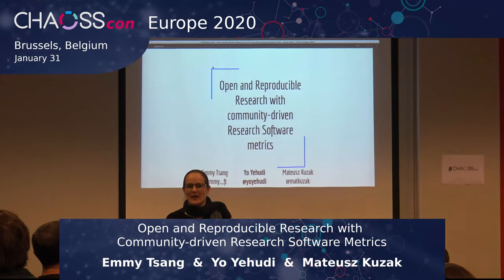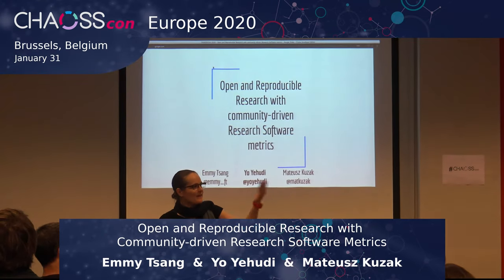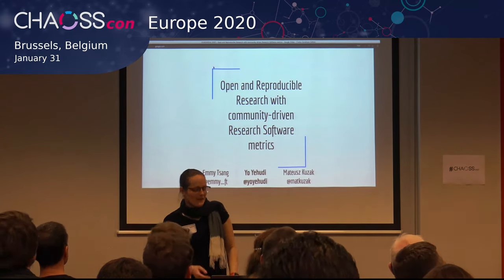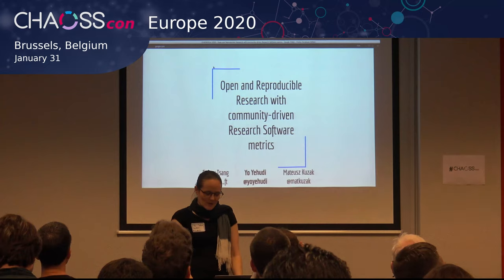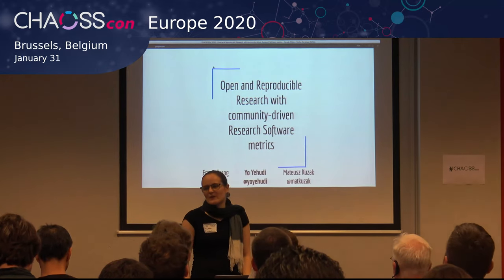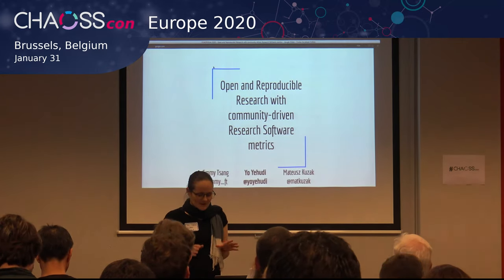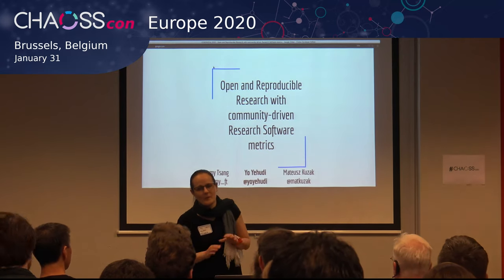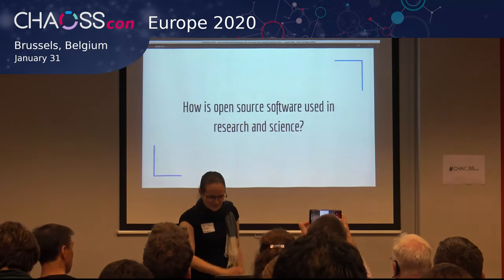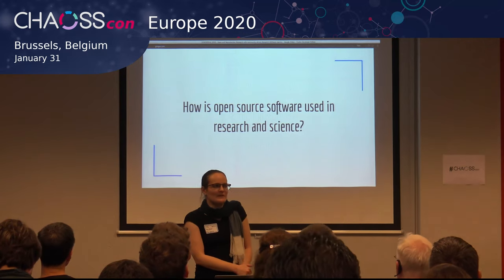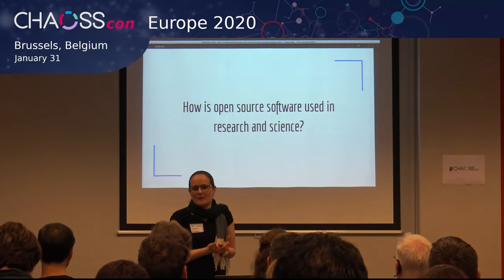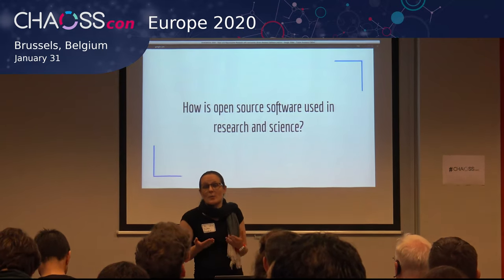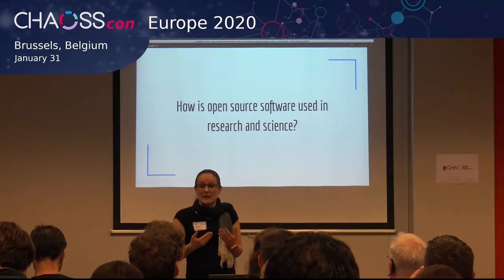I am presenting this talk with a couple of other colleagues. I have Emi Tsang with me here, and Mateusz. So I'm here today to talk a bit about metrics in research. And if I say science instead of research at any point, I apologise, it's an accident. I work in science, but I mean research. To talk about why research is associated with chaos in any way, I'll talk about how research actually uses software.